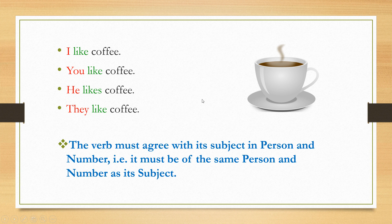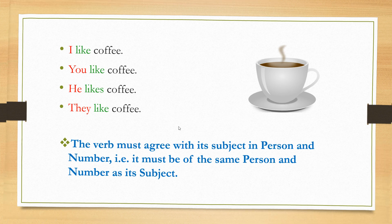Sometimes it is not very easy to decide whether the subject is singular or plural. We often get confused whether we should use the singular or plural form of the verb. Some such special cases are very important and you must learn them carefully. So we are going to discuss the different rules — when to consider the subject as singular or plural. Let's move on to the different rules of subject-verb agreement.